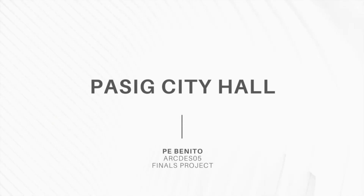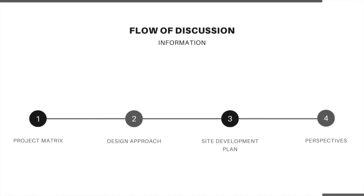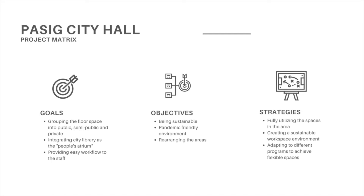Greetings, I'm Vanessa Bianca Cabinito and I will be presenting my sheet. We were assigned to redesign and create flexible spaces in Pasig City Hall while considering the users' needs. The information I will be discussing includes the project matrix, design approach, site development plan, and perspectives. For the project matrix, the goal of this project is to create flexible spaces and have designated areas for people to use while also integrating the city library as the people's atrium and other needed spaces. The objective is to apply sustainability into building spaces while creating a safe environment.